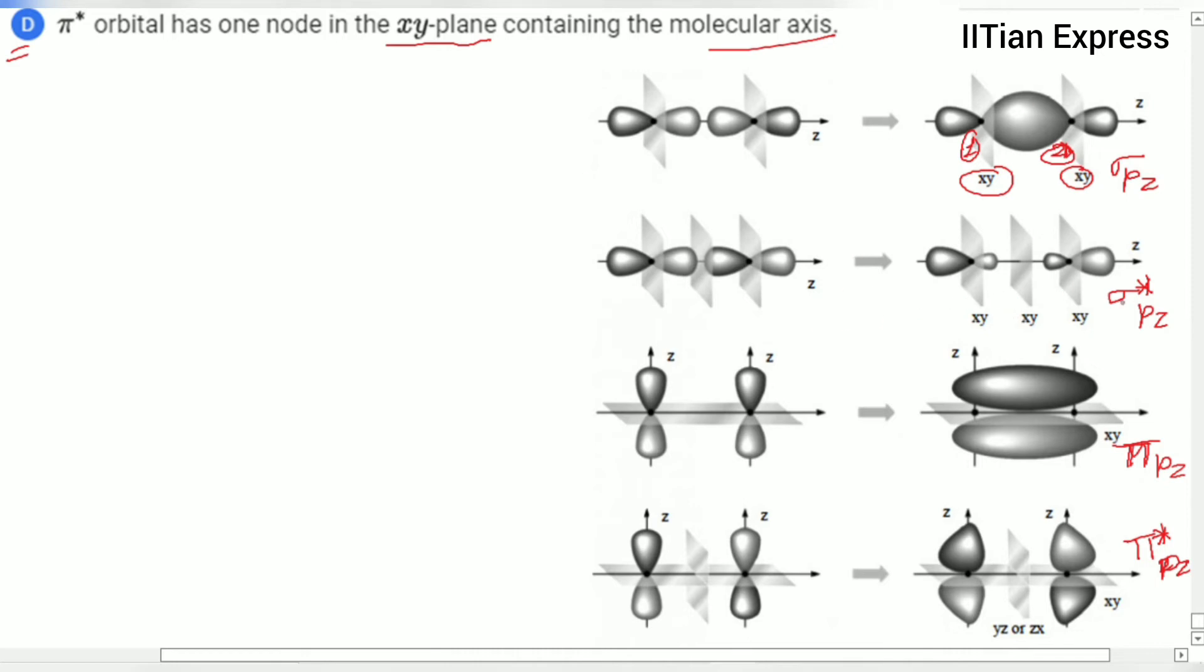Now come to the pi 2p. Here we are having one node in the xy-plane. Now come to this one, pi star 2p.